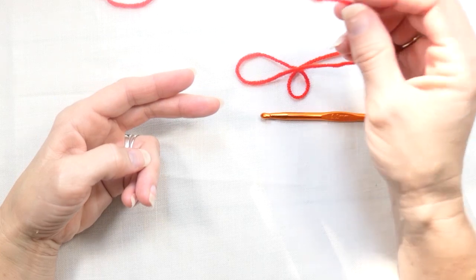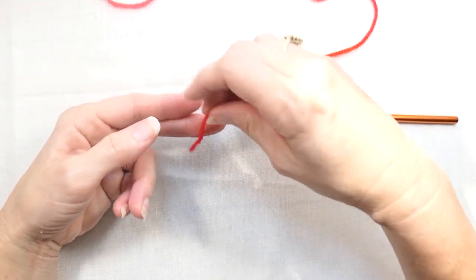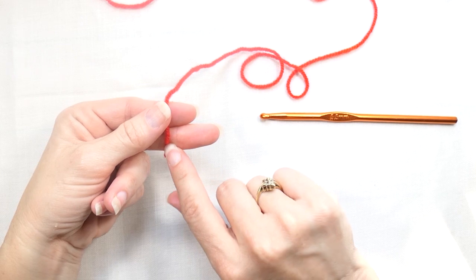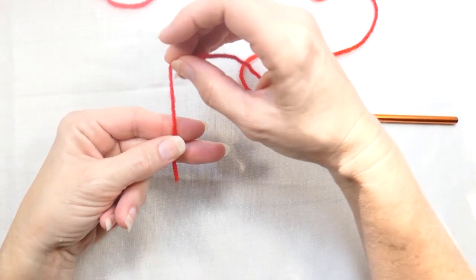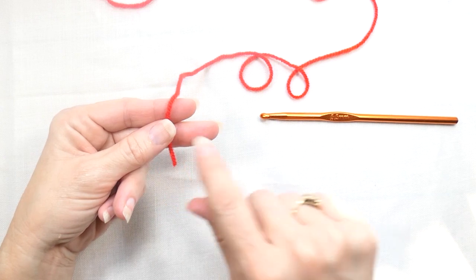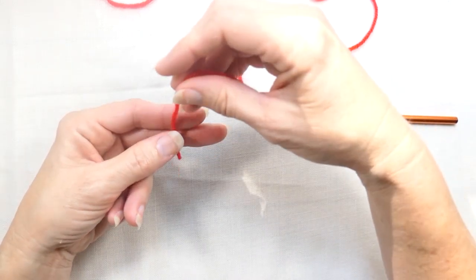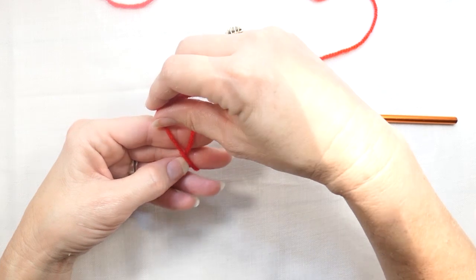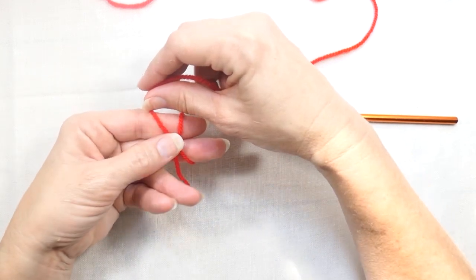So I'm going to use my index finger and my middle finger and I'm going to put the yarn end down to where my middle finger is and then over where my index finger is and I'm going to hold it in the middle with my thumb and I'm just going to wrap it around so it's like an X.